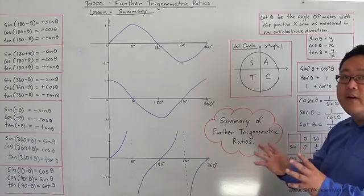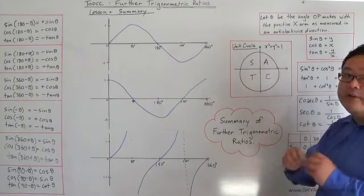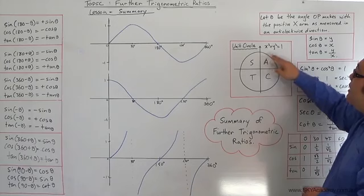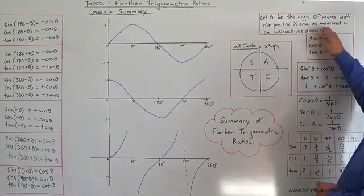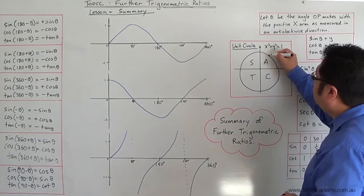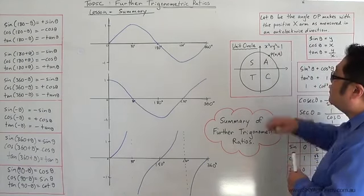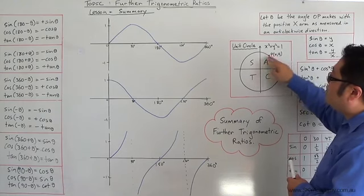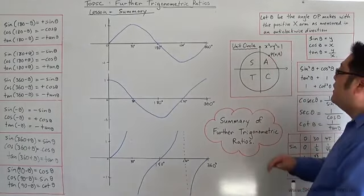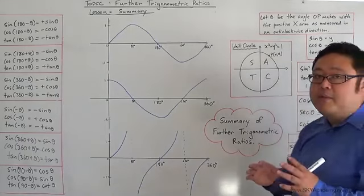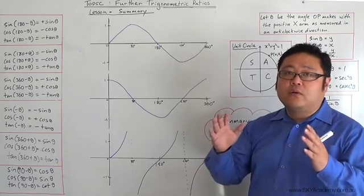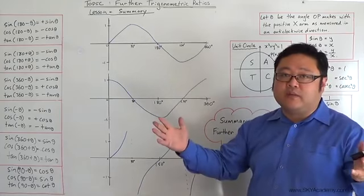we've been able to redefine our angle theta for trig ratios as follows: to let the angle theta be the angle that a point P makes with the positive x arm as measured in an anticlockwise direction. So in other words, if you were to have a point P(x, y), it is the angle that this line makes with the origin and the positive x arm. It's that angle measured in an anticlockwise direction that we're interested in, and that will give us the ability to work out the trig ratios sin, cos, and tan for any angle greater than 90 degrees, in fact, any angle whatsoever of any size.